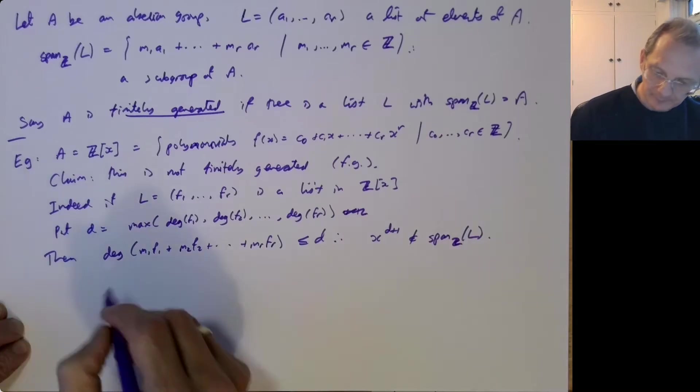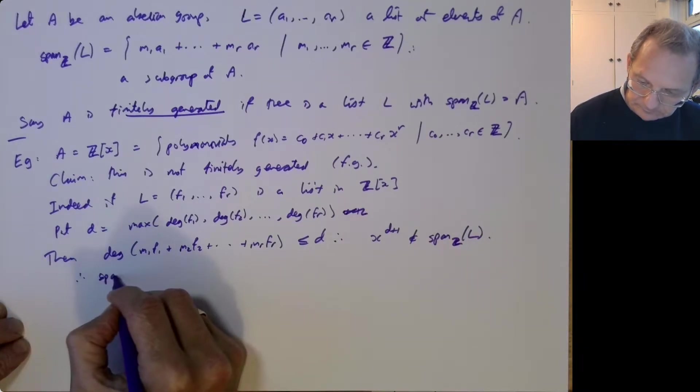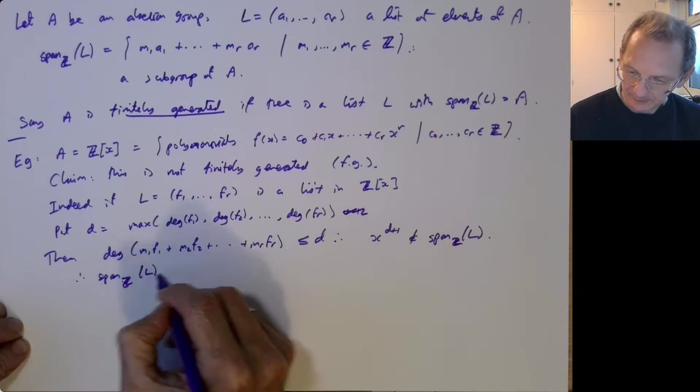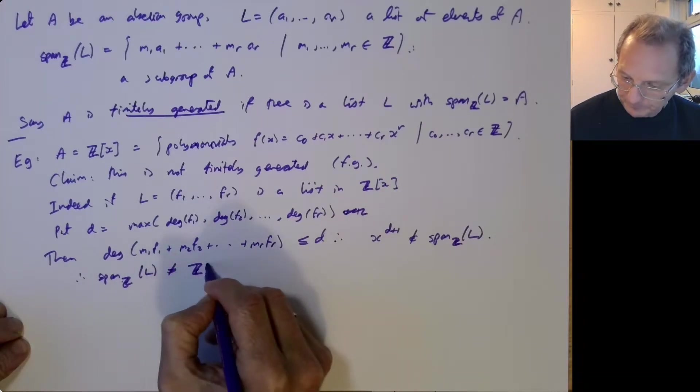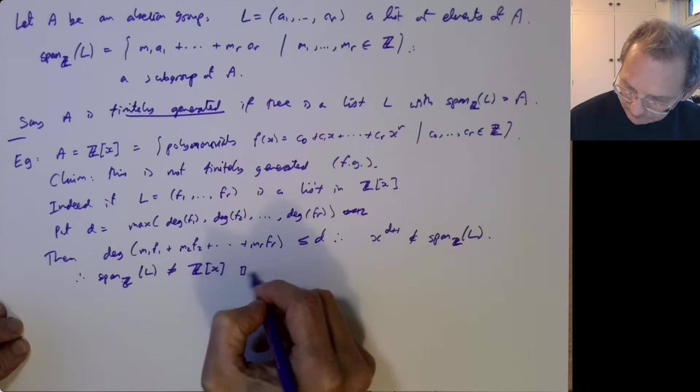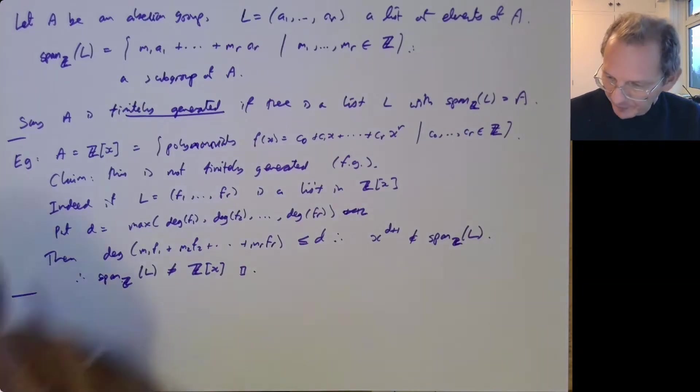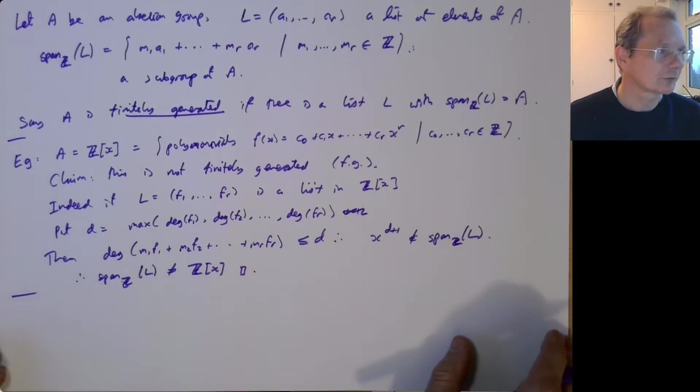So the span of L can't be equal to the whole group. So that's the proof that Z[x] is not finitely generated. We'll do one other example.